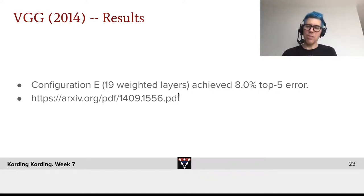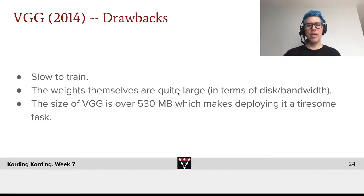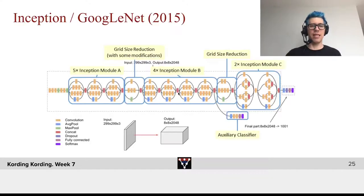It achieved 8% top-five error and therefore was considerably better. It has certain drawbacks: it was incredibly slow to train, the weights themselves are quite large in terms of disk and bandwidth. The size of a VGG is over 530 megabytes, which makes deploying it kind of tiresome at that time.